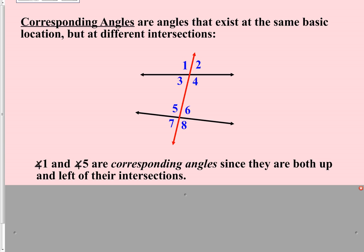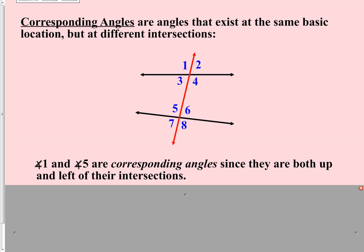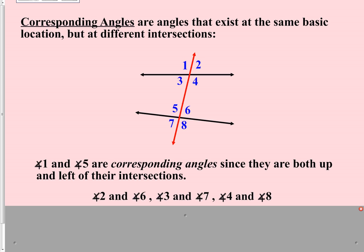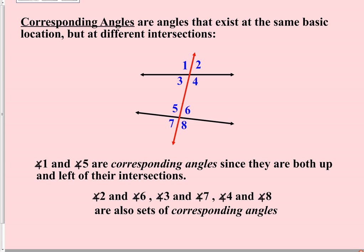Is that the only example of corresponding angles in the picture? Absolutely not. We could have easily started with angle two — it corresponds with angle six. Then there is angle three and angle seven, and also angle four and angle eight. Those are all examples of corresponding angles because they are along the same transversal and exist in the same basic positioning but at different intersections along that transversal.